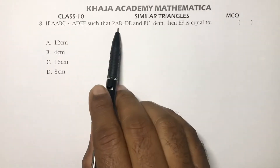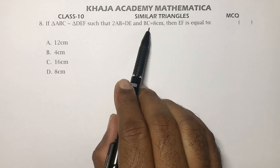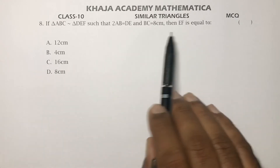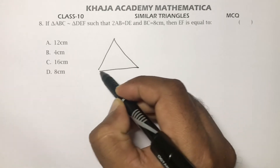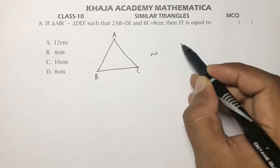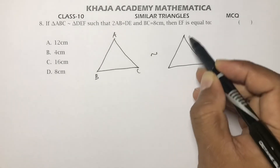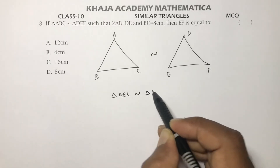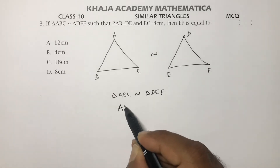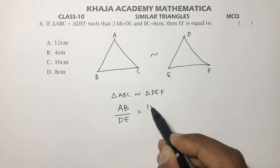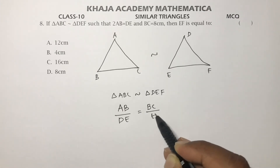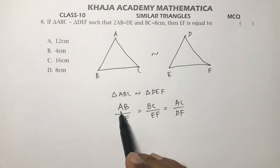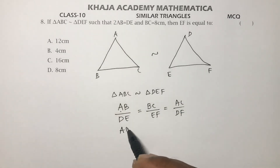New problem: triangle ABC is similar to triangle DEF, where DE = 2·AB and BC = 8 cm. We need to find EF. Since the triangles are similar, write sides proportionally: AB/DE = BC/EF = AC/DF.